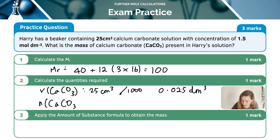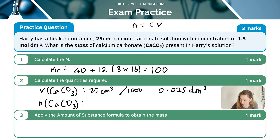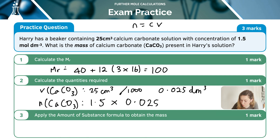Therefore, the moles of calcium carbonate — n(CaCO₃) — uses n = cv. The concentration is 1.5 mol dm⁻³ as given, and the volume converted to decimetre cubed is 0.025. So it's 1.5 times 0.025, which equals 0.0375 moles.